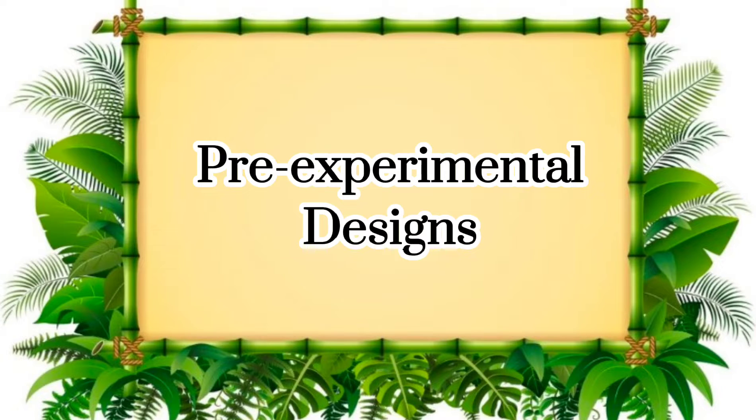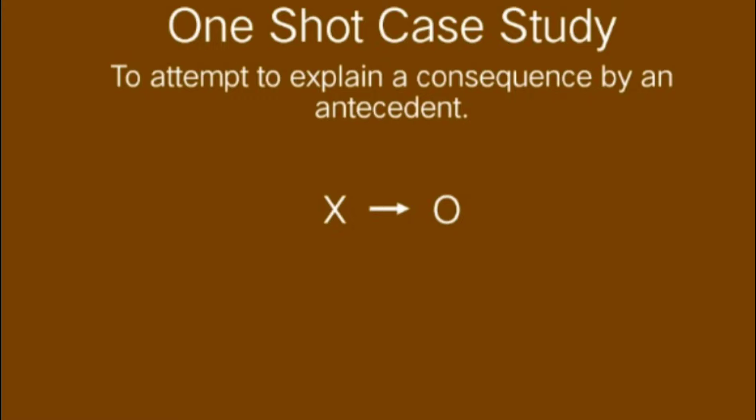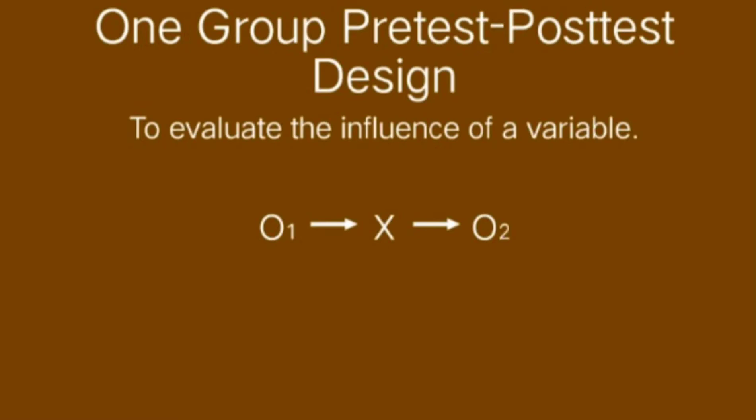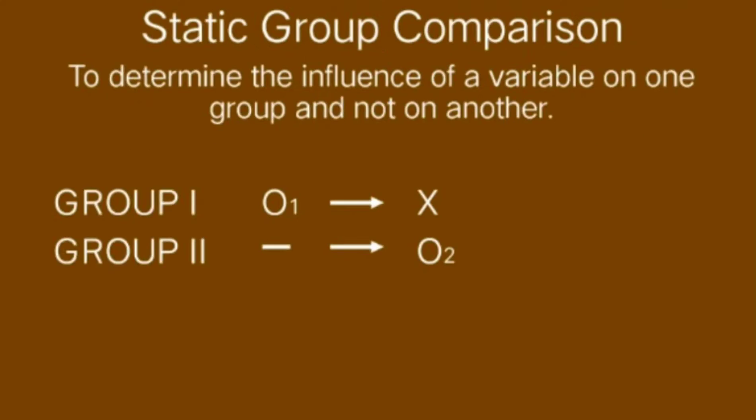Pre-experimental designs. The one-shot case study, which can be diagrammed simply as XO, is an extremely weak design. The one group pre-test post-test design presents a slight improvement over the one-shot case study because it incorporates a pre-test or one more observation point. Another pre-experimental design, which improves a bit more on the preceding designs, known as the static group comparison.